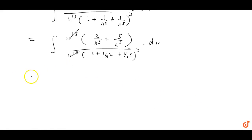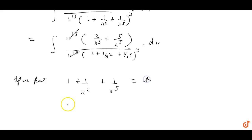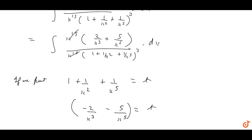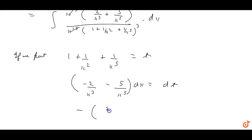Now we put the substitution: let t = 1 + 1/x^2 + 1/x^5. Differentiating, dt = (-2/x^3 - 5/x^6) dx, which means (-2/x^3 - 5/x^6) dx = dt. The numerator in our integral exactly matches this expression.